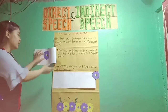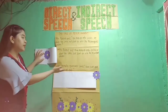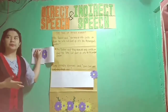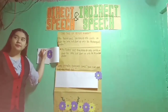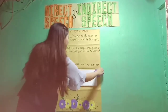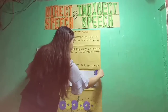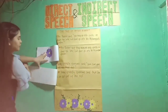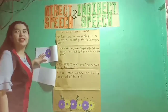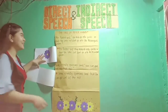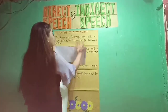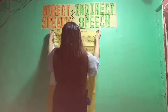How about number two? Yes, Ms. Columna. Number two: 'Some friendly sparrows said, You can get out of that net.' The correct indirect speech is: 'Some friendly sparrows said that he could get out of the net.' Congratulations, you also got the correct answer. It seems that you really understand — 100% — our lesson for today.